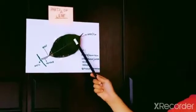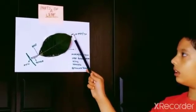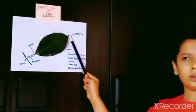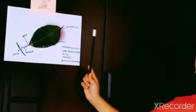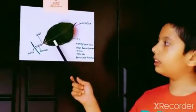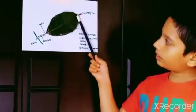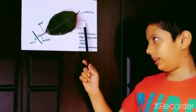We are going to start from top to bottom. This top part is called the tip or apex. You must be wondering what is this line going through the middle of the leaf — this line is called the midrib or the main vein.